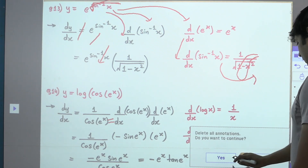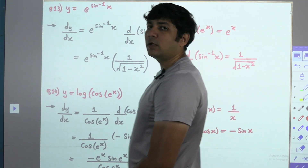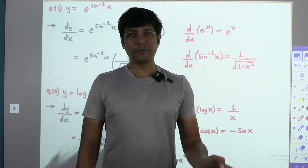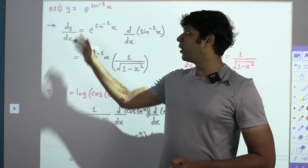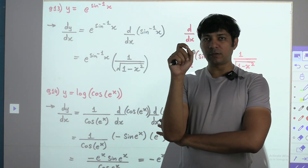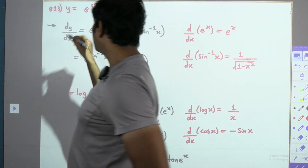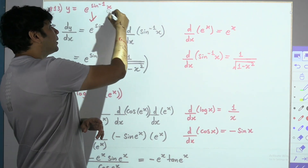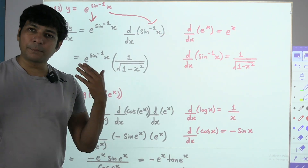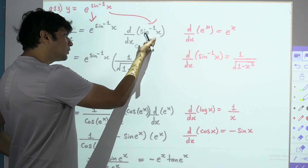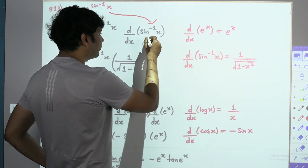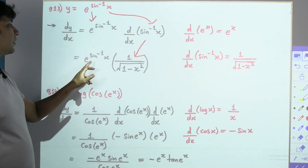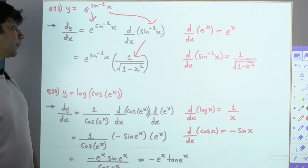Thirteenth problem — exponential with inverse trig: e^(sin⁻¹x). E^x is the only formula that remains the same whether you differentiate or integrate. Whenever you have an exponential with a weird power, write the question as is, then differentiate the power separately. Differentiation of sin⁻¹x is 1/√(1 − x²). Answer: e^(sin⁻¹x) · 1/√(1 − x²).